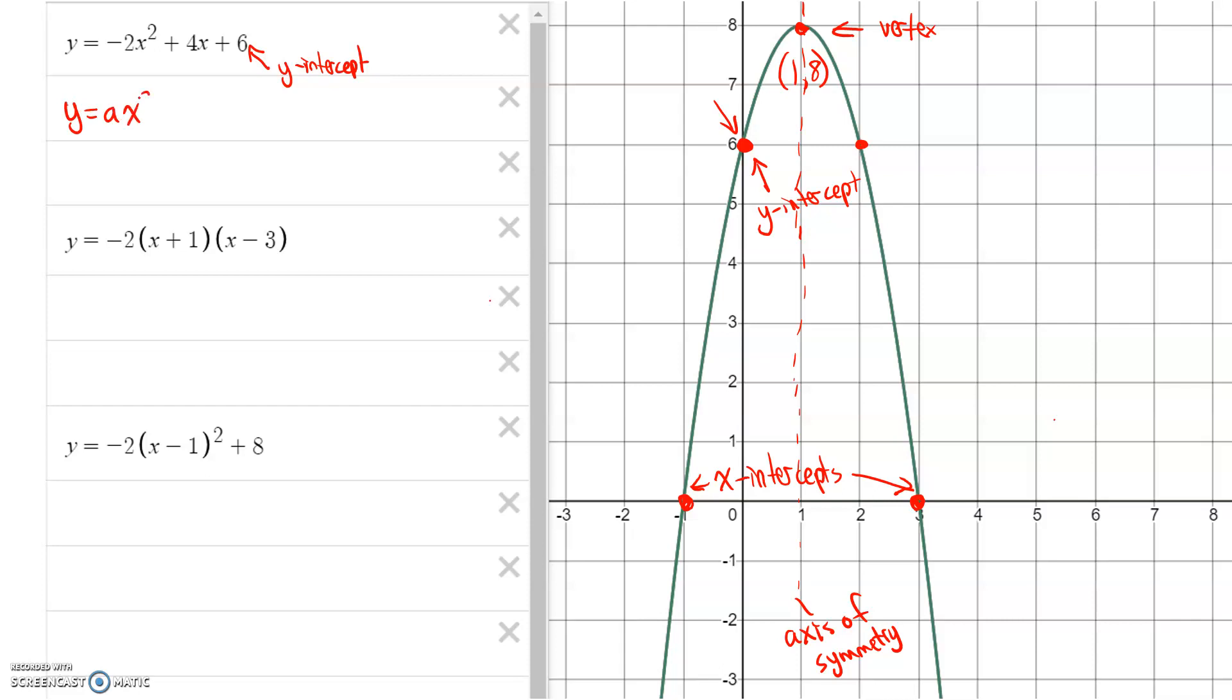And in general, we could say that this is in the form y = ax² + bx + c, where a here is negative 2, b is 4, c is 6. And c, any time it's in this form, is the y-intercept. We call this equation the standard form of a parabola.